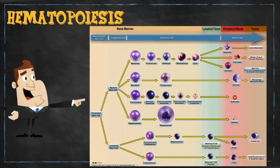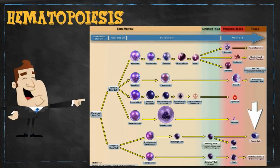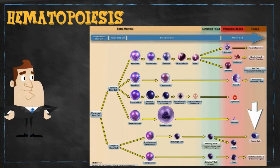Plasma cells are also a product of hematopoiesis. However, unlike the other blood cell elements noted earlier, they do not end up in the blood. Plasma cells' end result product — which are the antibodies — are the things that end up in the blood, rather than the plasma cells themselves.